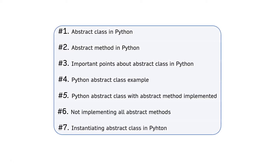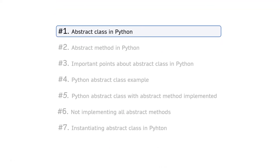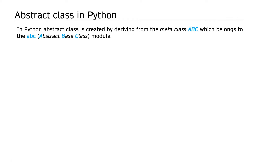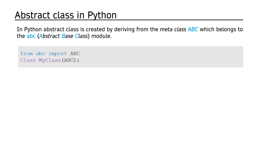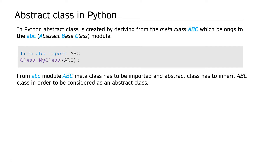In Python, an abstract class is created by inheriting from the metaclass ABCMeta, which belongs to the ABC (Abstract Base Class) module. The syntax for creating an abstract class requires importing ABCMeta from the abc module, and the abstract class has to inherit the ABC class in order to be considered as an abstract class.